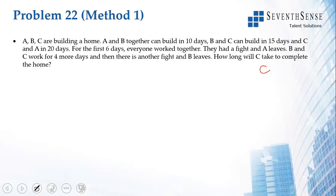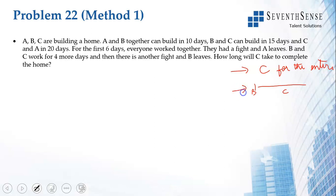The question asks how long will C take to complete the home. We can look at two outcomes: one is how long C would take if working alone from the very beginning, and the other is how many more days does C take after B leaves. If the question was how long will C take to complete the home after B leaves, we will find that out, or we can find how long C takes working alone from the start.